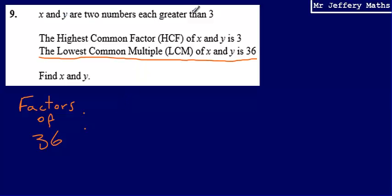So factors of 36 are as follows. I'm not going to list 1 and 2 because it says they have to be greater than 3. So factors of 36 are 4, 6, 9, 12, 18, and 36.